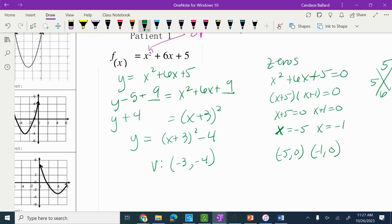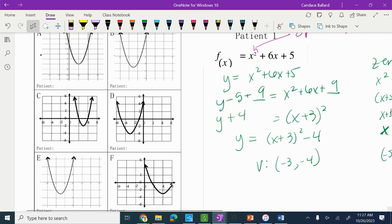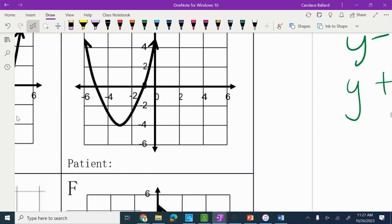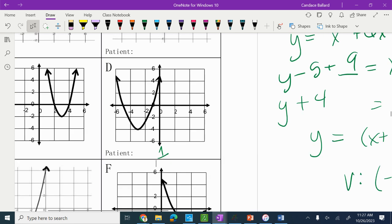So are my zeros on that graph? Negative five and negative one. Okay. So this one, I would go ahead and write in that this was patient number one. It was on D. It's patient number one. So you basically, you have to match up your equations to your graphs.